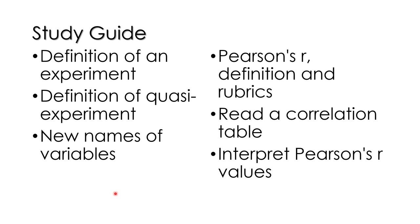That's it for quasi-experiments and quasi-IVs. Here's the study guide for the exam and quizzes: know the definition of an experiment, know the definition of a quasi-experiment, know the names of variables, know what Pearson's R is and define it, know its rubrics, and be able to read a correlation table and interpret Pearson's R values.